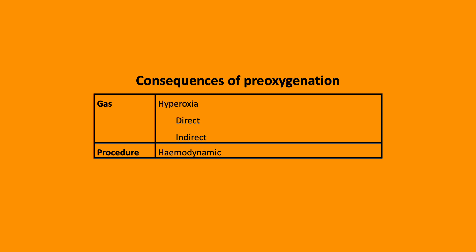Reabsorption atelectasis remains one of the most important factors to consider. The percentage of nitrogen in room air is high, and as it is poorly water-soluble, it remains present in the gas phase in the alveoli and thus maintains alveolar patency.